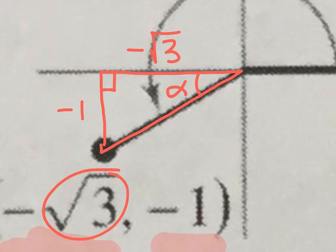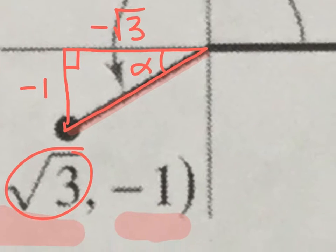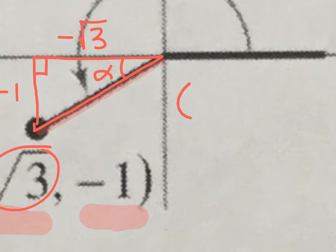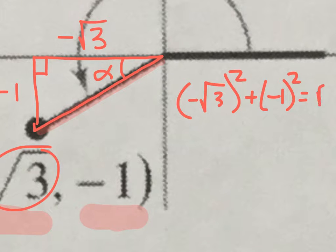We need to find this radial length, and to do that we use the Pythagorean theorem. So negative root 3 squared plus negative 1 squared equals radius squared. Positive 3 plus 1 is radius squared. 3 plus 1 is 4, so this has a radial length of 2.